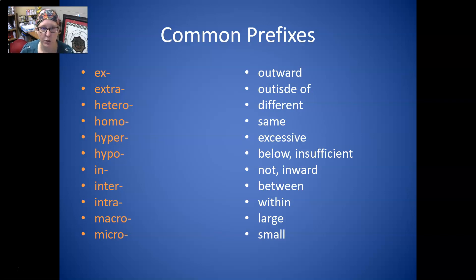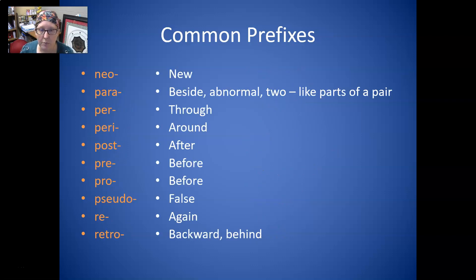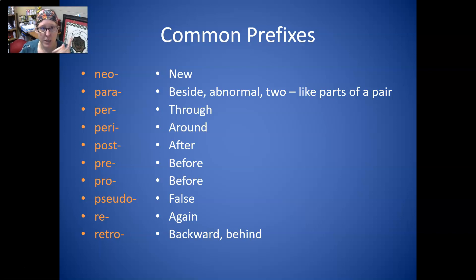For example, intercellular is between the cells, and intracellular is inside the cell. Macro with an A is large, but micro with an I is small. Neo is new. Para means beside, abnormal, or two — like parts of a pair, like you have two legs, two ears, etc. Per means through. And peri means around.